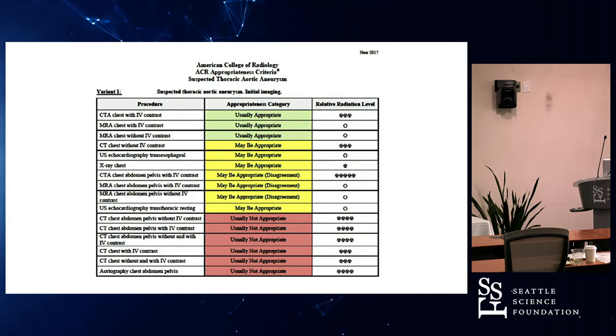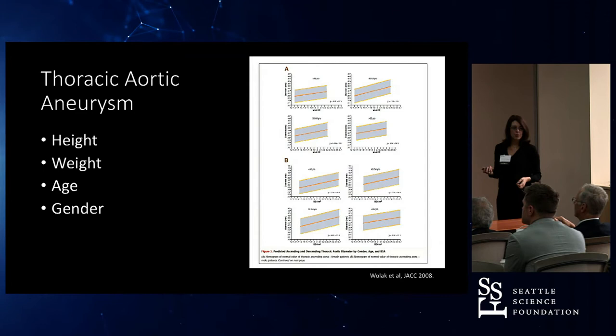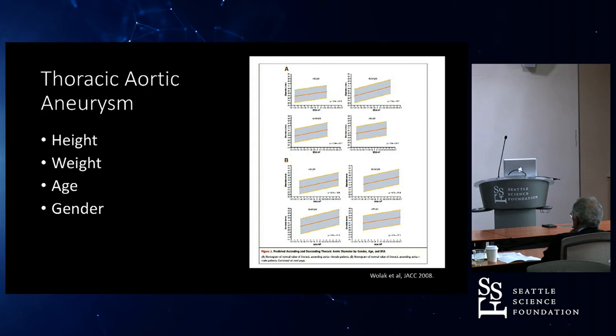The ACR has its appropriate criteria. CTA is the number one modality if you're suspecting a thoracic aortic aneurysm — you want to do a CTA of the chest. How do we determine a thoracic aortic aneurysm? The size of my thoracic aorta is going to be different from somebody who's bigger and taller. So we base this on height, weight, age, and gender.